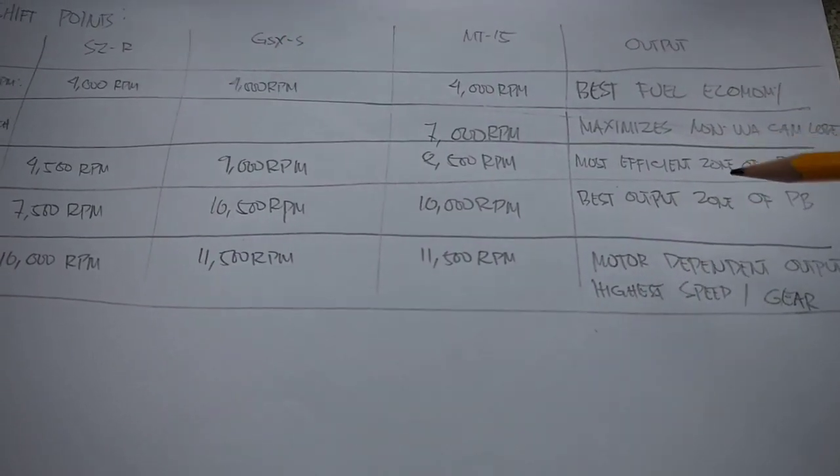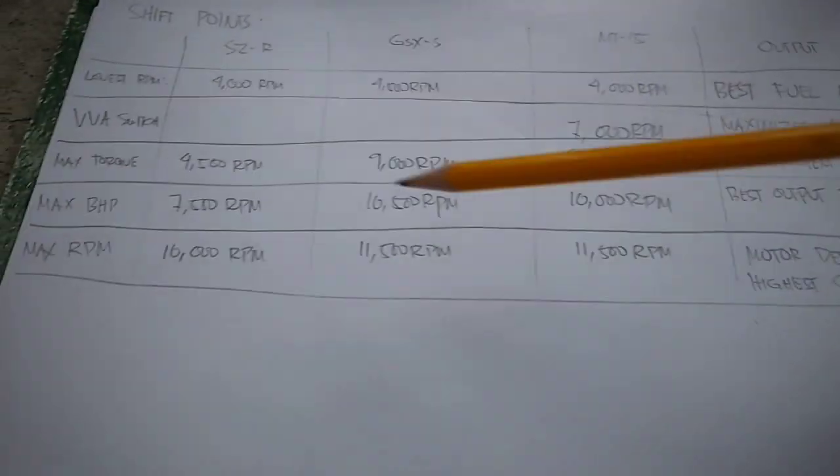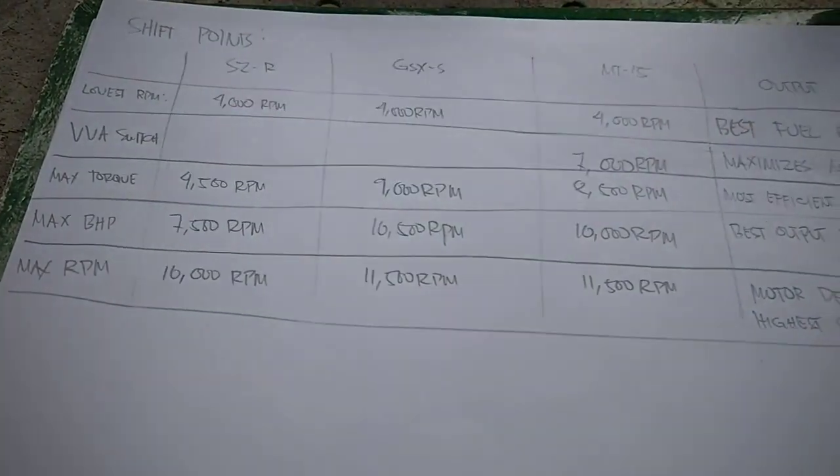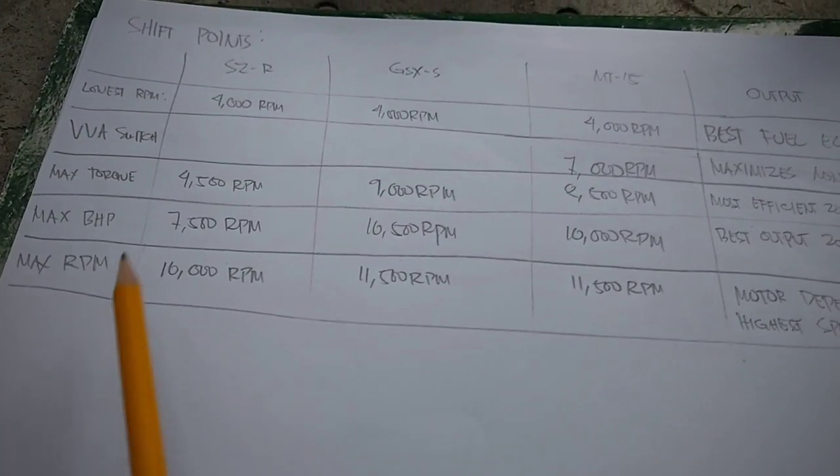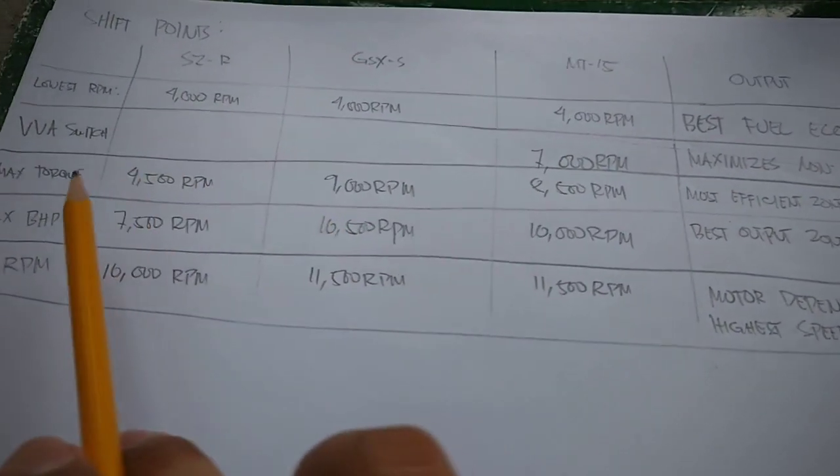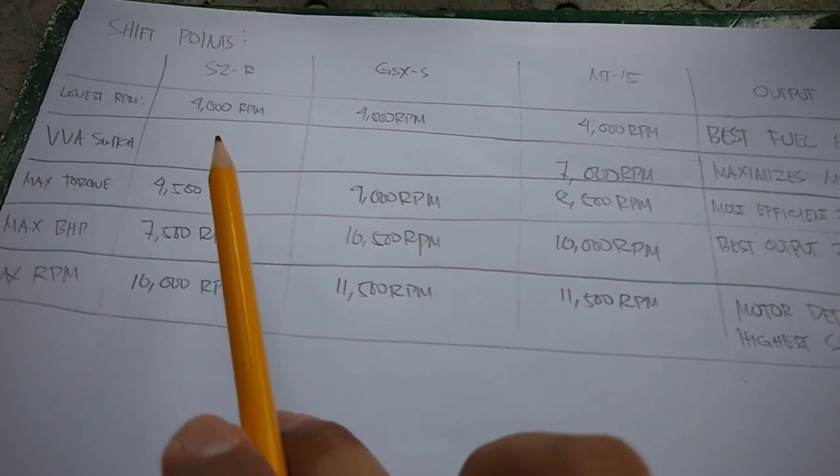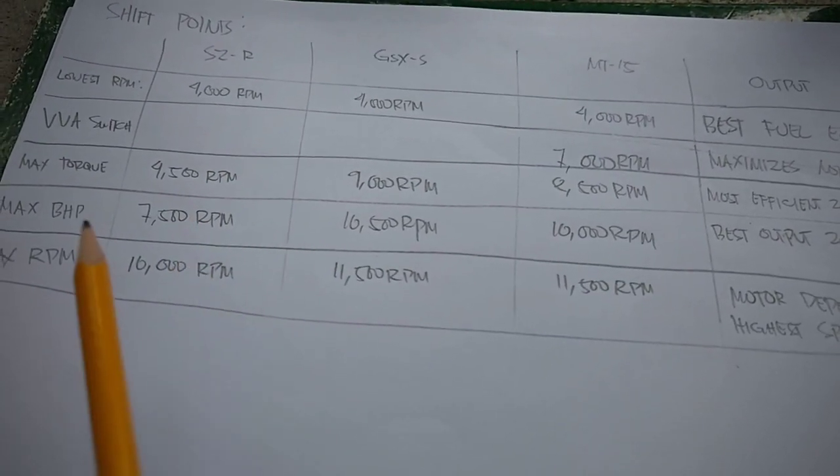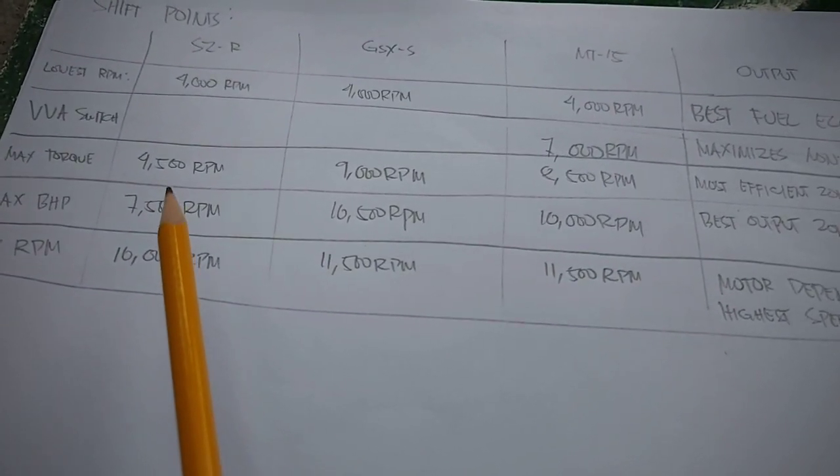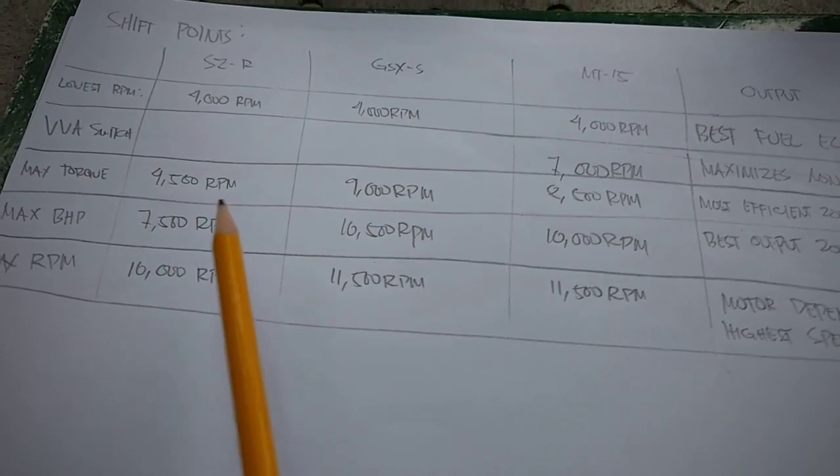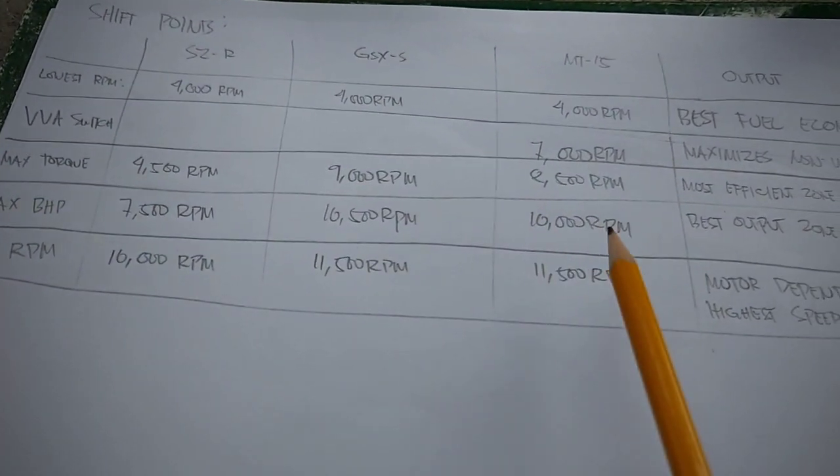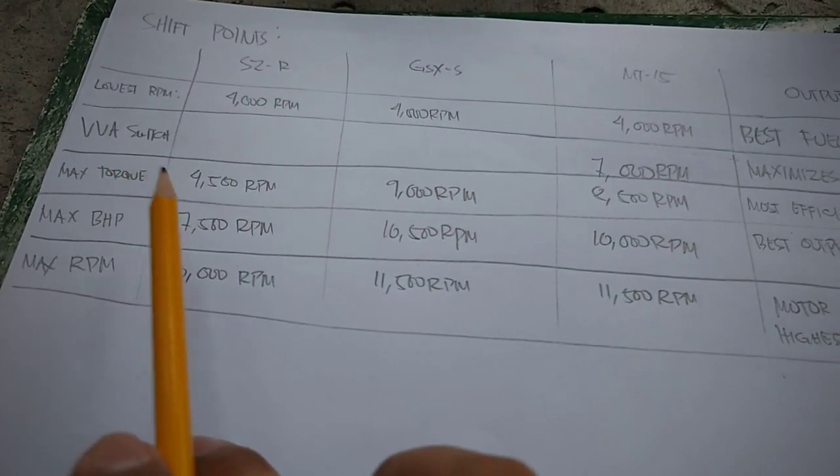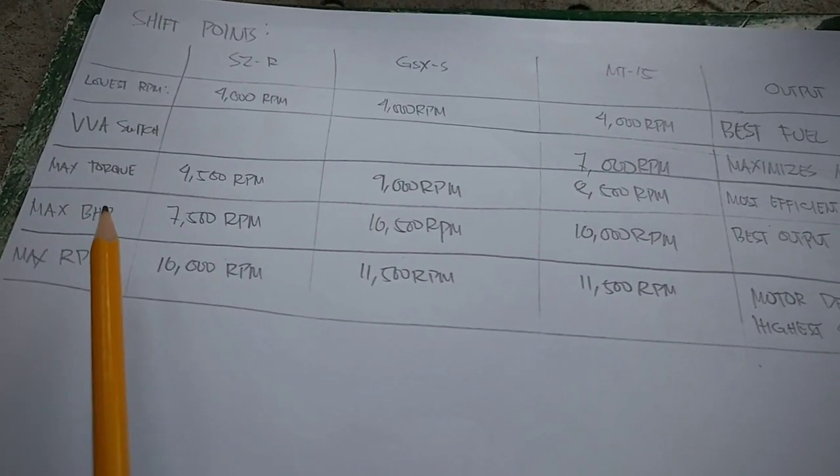So para mas madaling maintindihan, gawin natin situational. Kung gusto mong umakyat at the most efficient RPM, you maintain the torque kung saan, you maintain the RPM kung saan nakalabas yung maximum torque mo. Kung gusto mong umarangkada, kung gusto mong pinakamabilis na takbo ng motor mo sa bawat gear, of course, you use the max horsepower RPM. So max torque kapag aakyat, max horsepower kapag o-overtake.